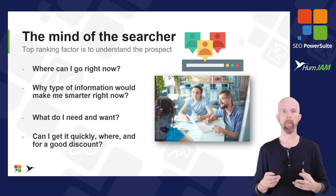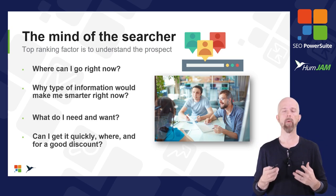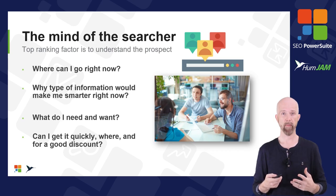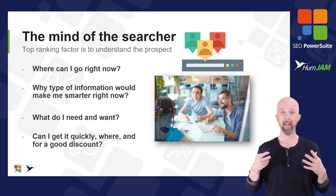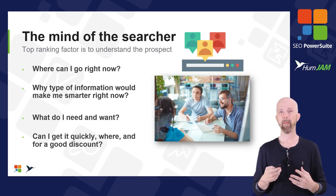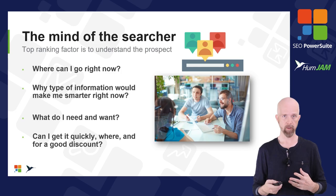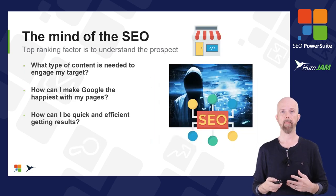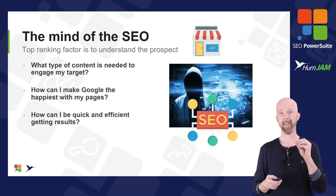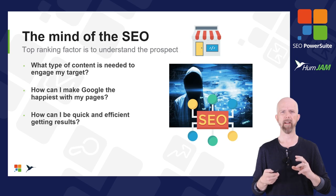In the mind of the searcher, we want to understand where they want to go, what they're trying to do, and what information is going to make them smarter. The more we can think about what the searcher is thinking about, the more we can optimize for it.